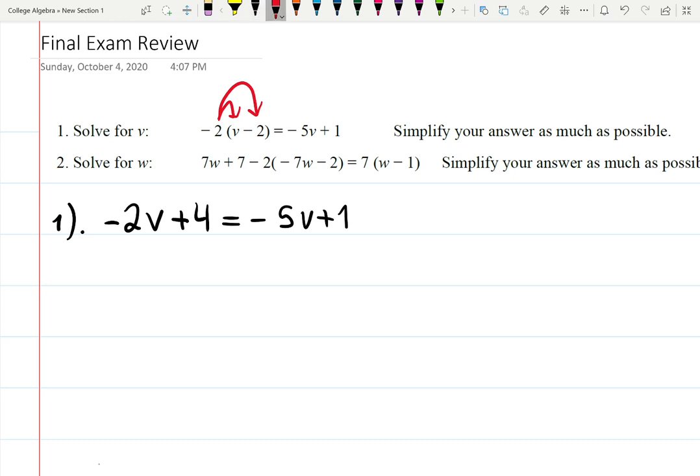My next step is to collect all the unknowns, which means all the terms that involve v on the left-hand side, and everything else move to the right-hand side. That means I will move -5v to the left. Every time you move something across the equal sign, you change the sign of that term, or basically you add 5v. So I'll have -2v+5v equals 1 was already on the right-hand side, but 4 should be moved to the right-hand side. That means I will have -4.